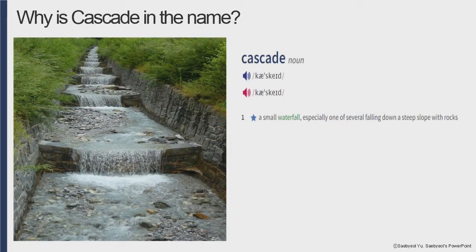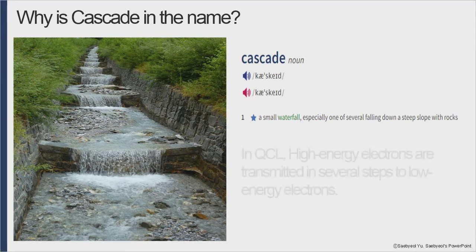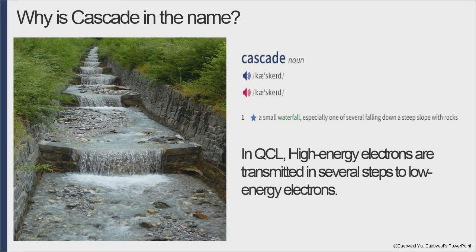Why is cascade in the name? The definition of cascade in the dictionary is a small waterfall. Just like water falling from a waterfall, the electrons inside the quantum cascade laser transition from high energy to low energy in multiple stages, hence the name cascade.